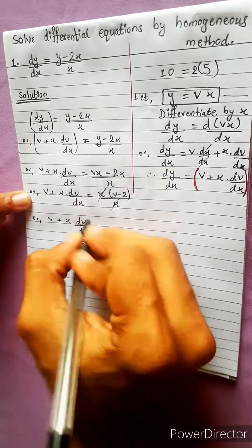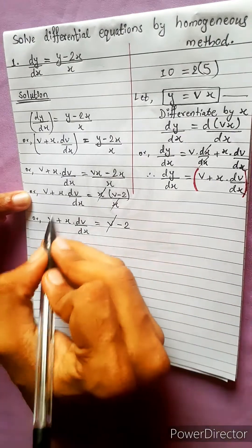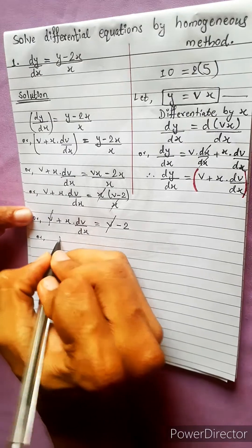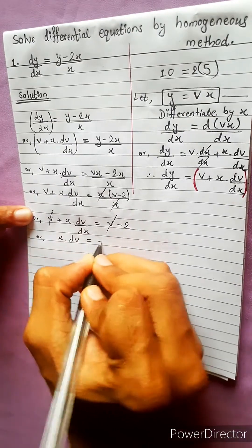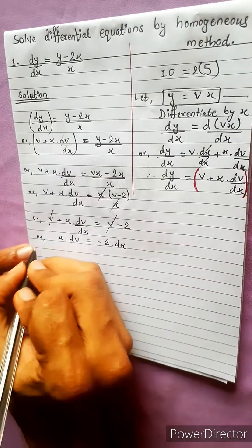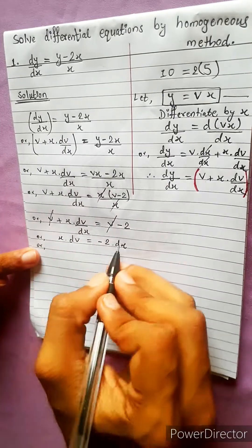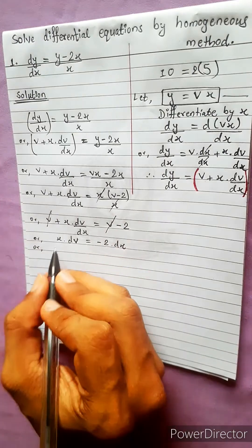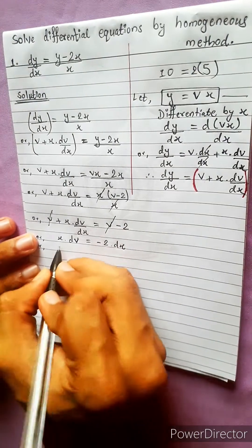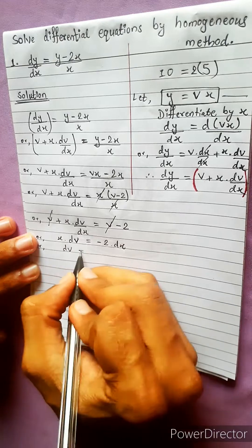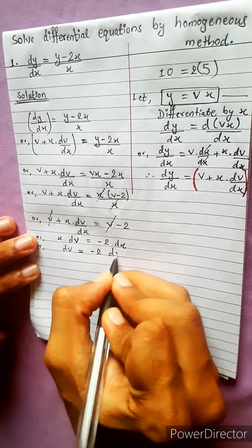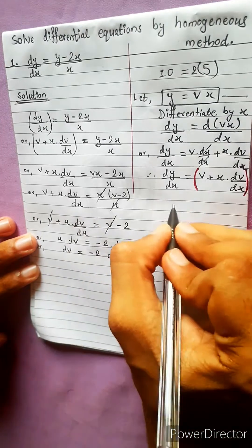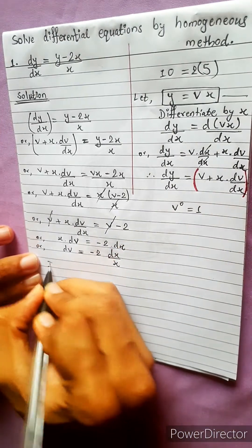The v terms cancel: x dv by dx equals minus 2. Separating variables: dv equals minus 2 dx divided by x. Integrating both sides.